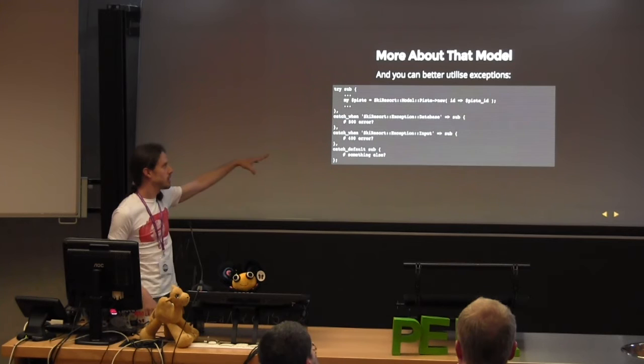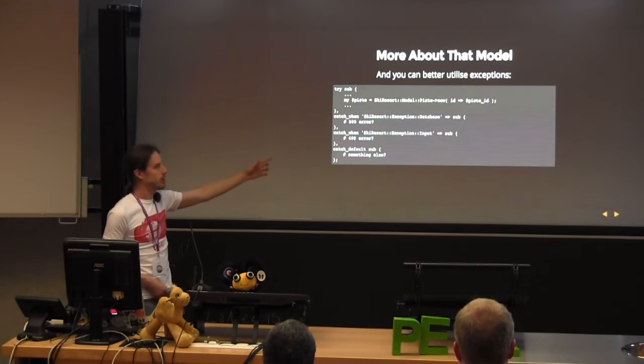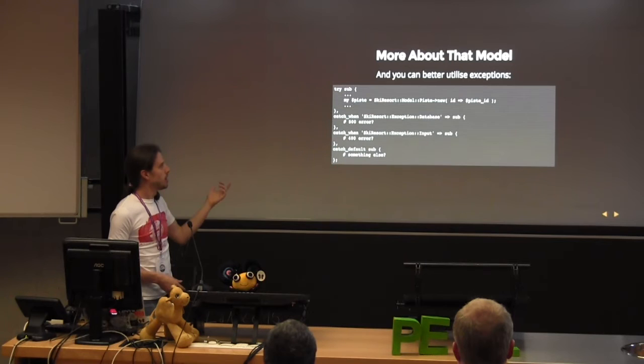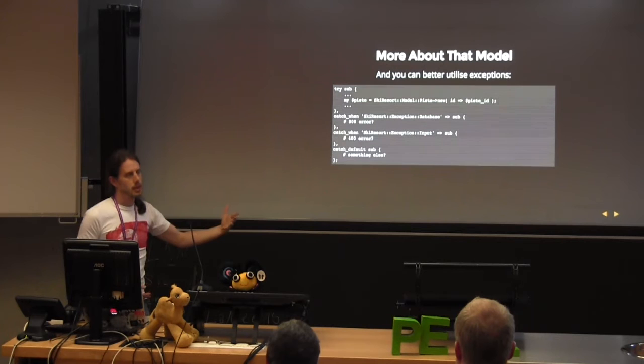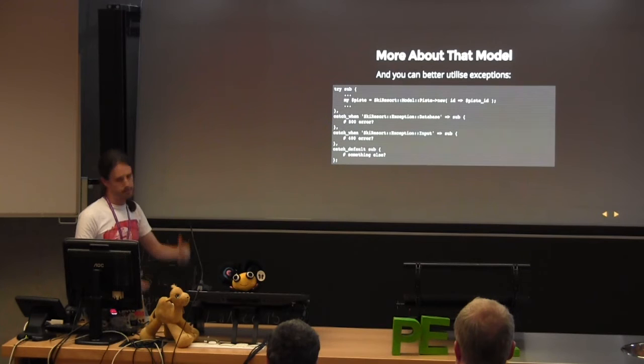We have a database exception for when things are going badly wrong, so we return a 500 server error. Or we have an input exception — perhaps the params passed in weren't quite right — so we throw a 400 bad request. We're handling the web side of inputs and outputs in the controller, and everything else is down in the model.